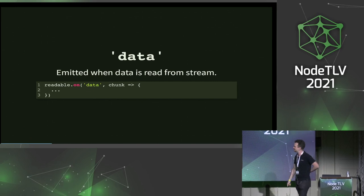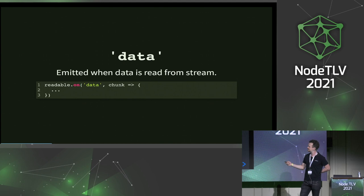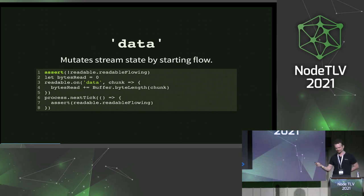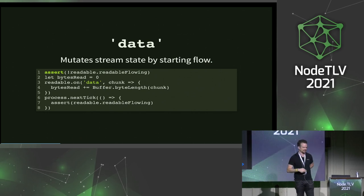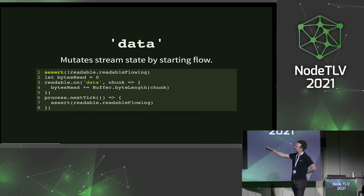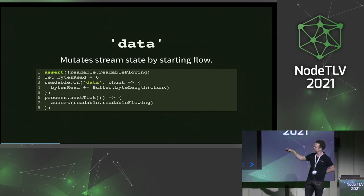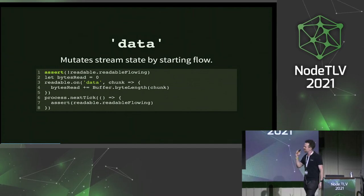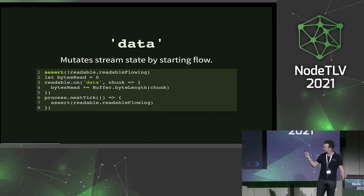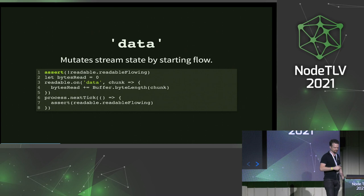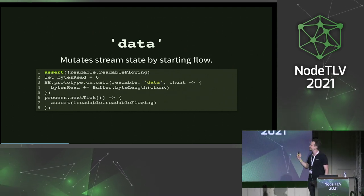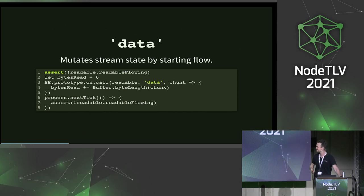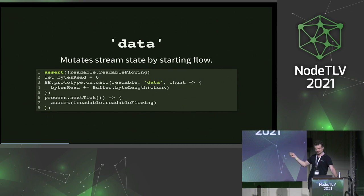Whenever you read data from a stream it gets emitted — not so strange. But as soon as you register an event handler on data, the stream starts flowing, which means it starts reading data. I've seen a lot of examples with this bug: somebody wants to keep track of how many bytes they've read, but they just register a data handler and then pass the stream on to someone else who, in a later tick, is going to start reading. What those other people notice is there's a lot of data missing in the beginning, because as soon as you register the data handler, you start the stream. The way to get around that is to use the EventEmitter prototype's on and call that — it won't trigger the stream starting. So remember, if you register a data handler, the stream will start flowing. Be careful.